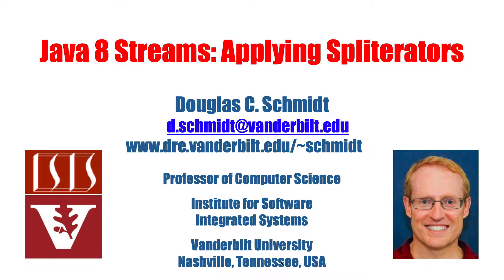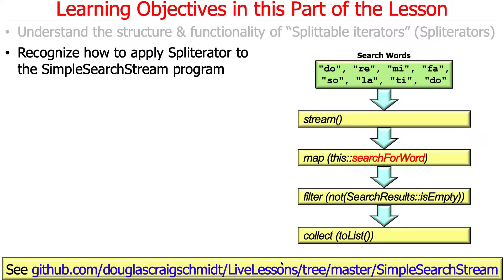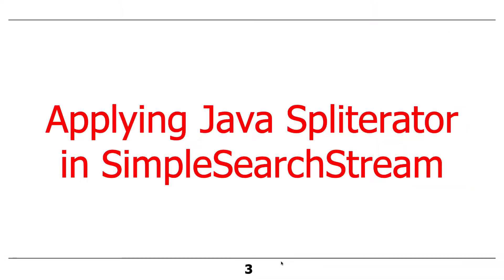A couple of weeks ago we talked about spliterators and I gave you an overview of what they were. Today we're going to talk about how to apply spliterators so you get a better sense of how they work, in the context of the simple search stream program we've been using to motivate features in Java 8 streams. In particular, we'll talk about the search-for-word method, which is used here as a method reference as a behavior for the map aggregate operation.